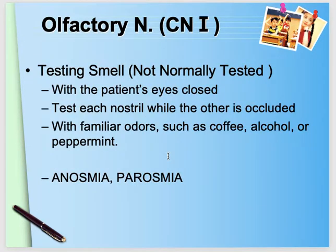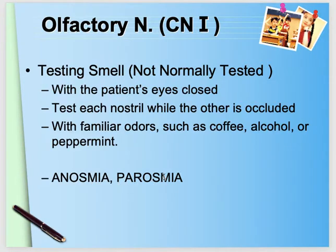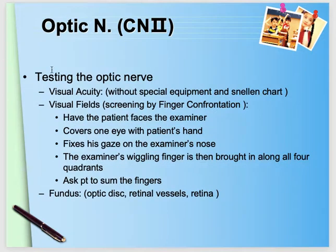The function of the olfactory nerve is smell. This nerve is usually not tested clinically — we can simply ask the patient if they have any change in their sense of smell. There can be anosmia, which is absence of smell sensation, or parosmia. Then we check the optic nerve.